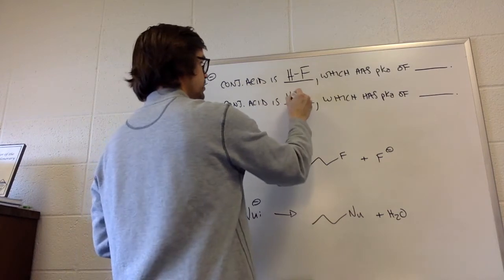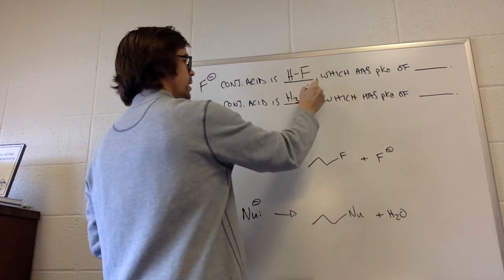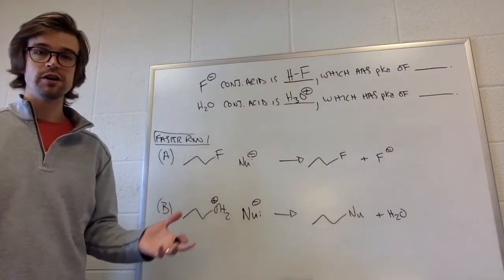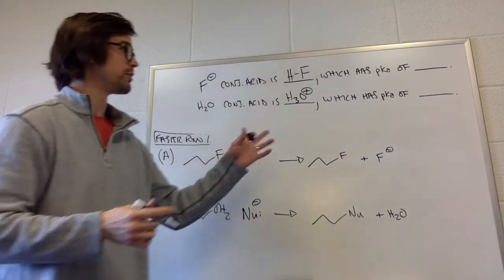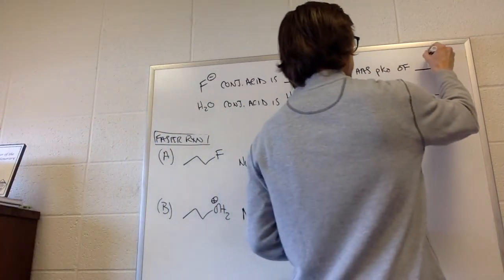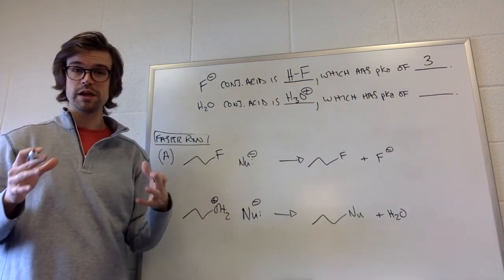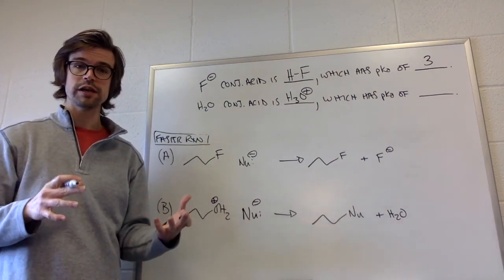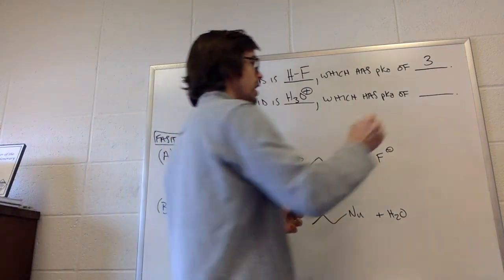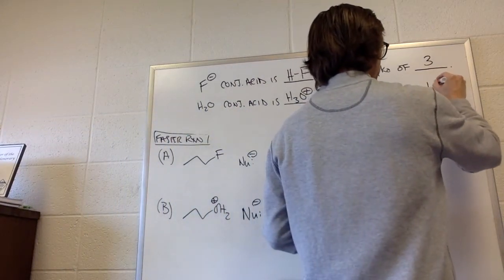That's what we've been doing all along. So F-'s conjugate acid is HF. H2O's conjugate acid is H3O+. HF, we just learned in the previous example that it has a pKa of 3. And this one, you guys should know. What's the pKa of H3O+, hydronium ion? Yeah, good job. It's minus 1.7.